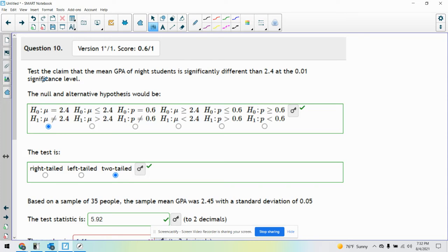All right, I'm just going to run through the whole thing to show you how we establish these things. It says test the claim that the mean GPA of Knight students is significantly different. This is your keyword: different. It doesn't say less than, it doesn't say greater than, it's just showing you that it's different than 2.4.